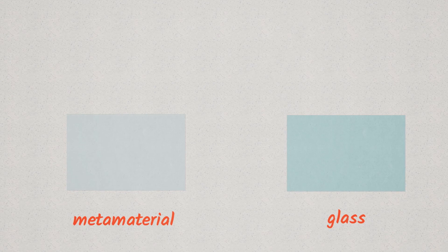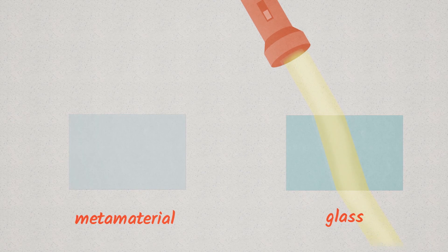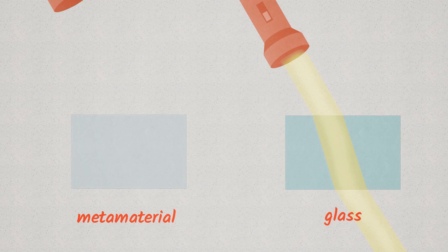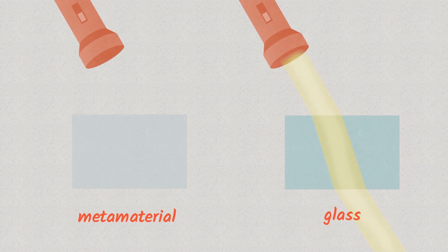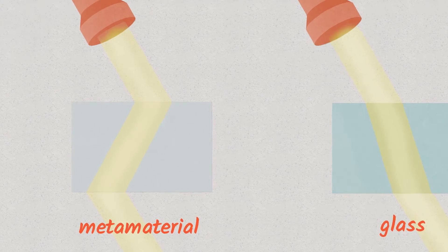So if you take a transparent object, usually light only bends when it enters or leaves the object. But if you control the way that you distribute small transparent objects, then you can control the way that light bends or moves through these objects. Each of these tiny nanoparticles refract light and change the way light moves in a metamaterial. By arranging them in a pattern, Chaitanya can control the way the nanoparticles work together to refract light. He can even arrange them so the metamaterial can bend light around objects.